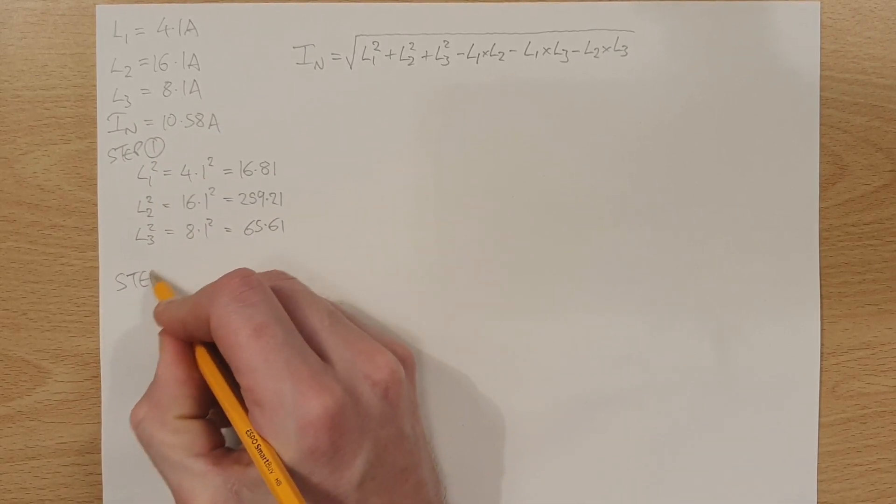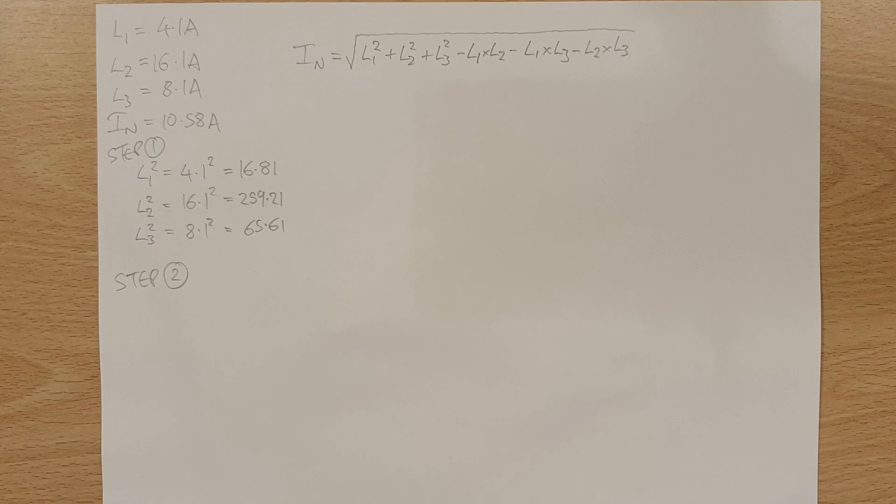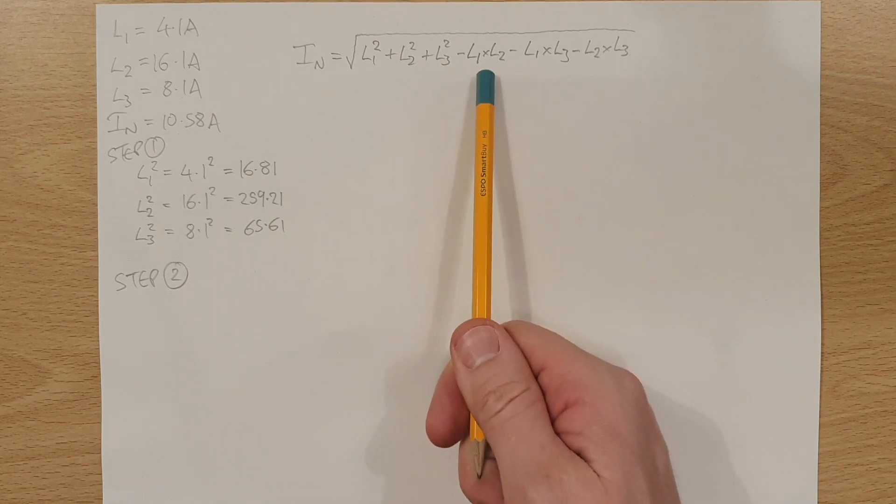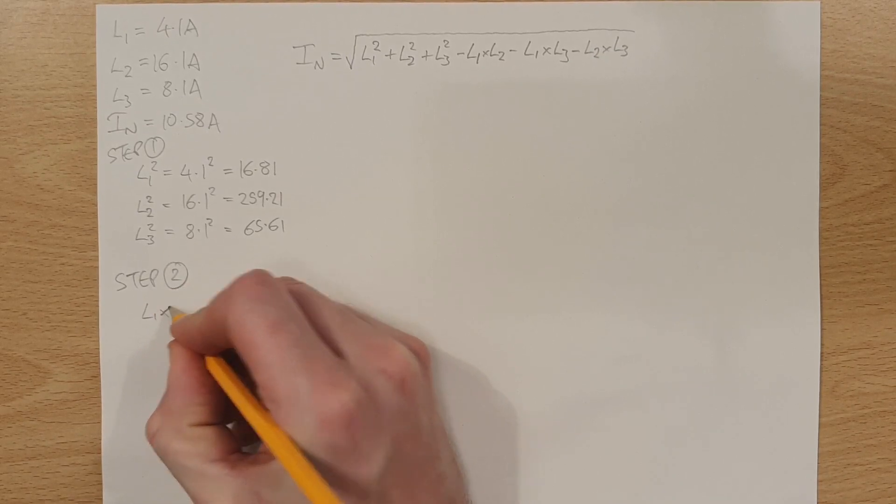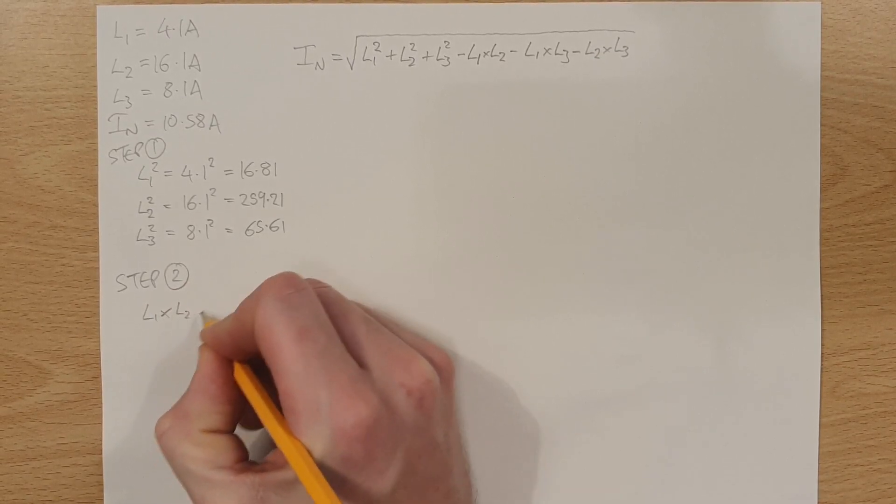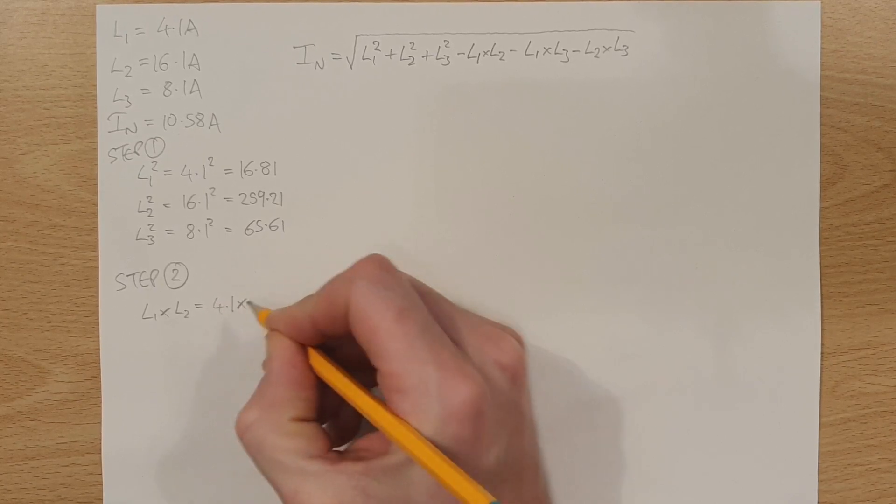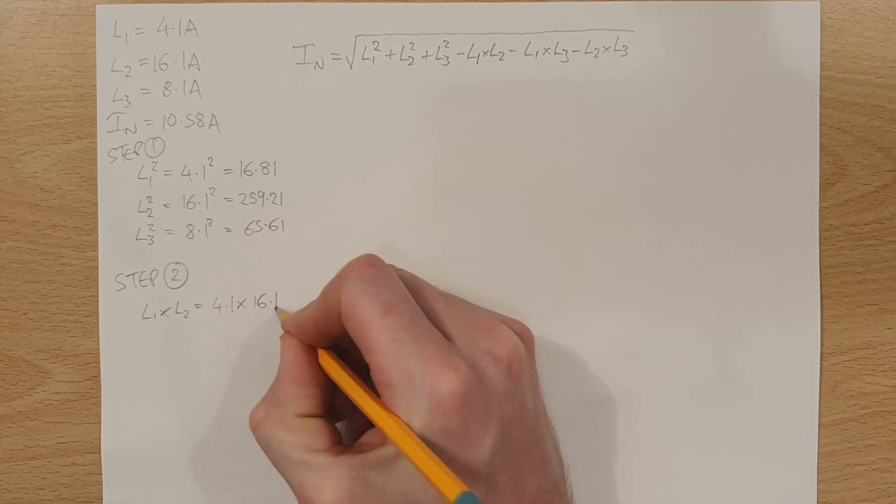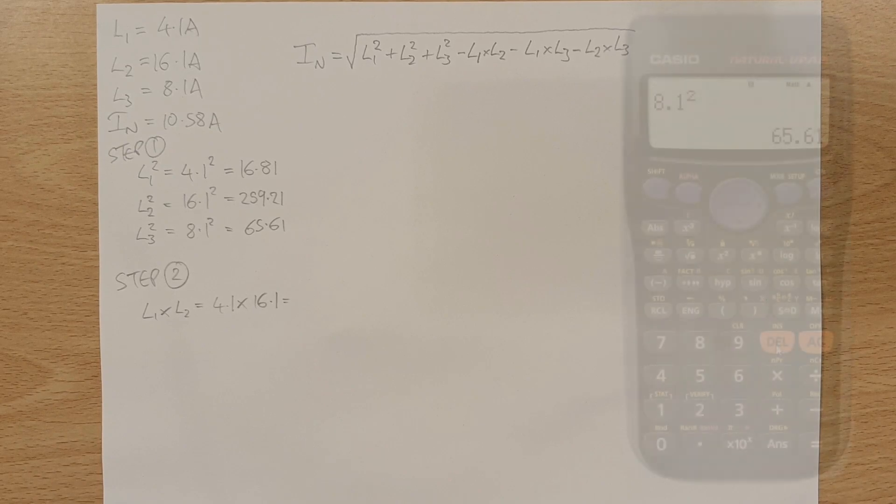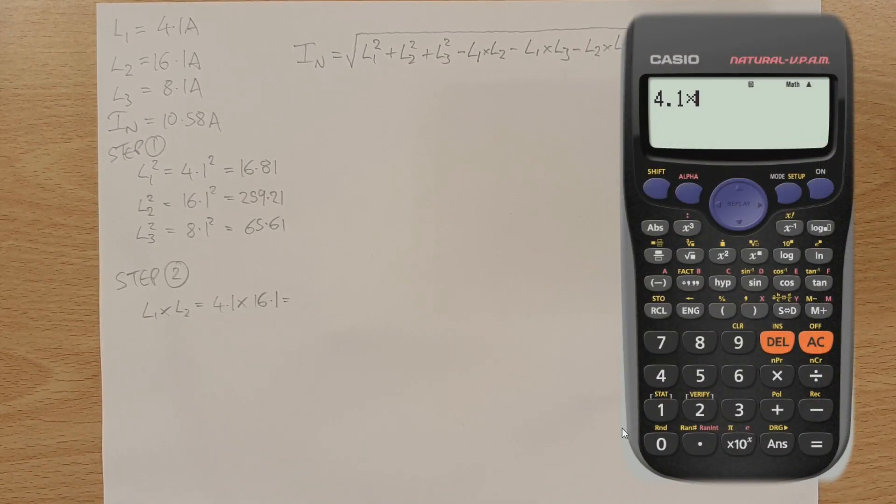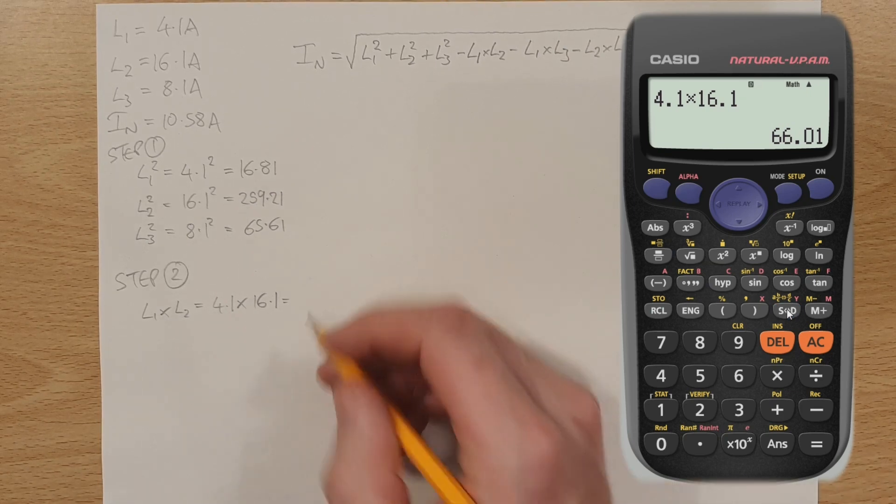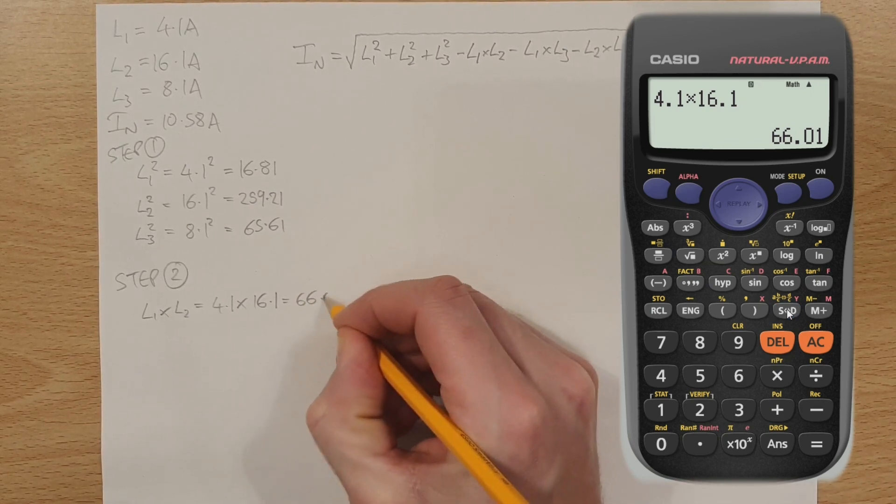So let's have a look at step number two now. Step number two is simply going to be this part where we figure out what these numbers are going to be. So L1 times by L2 will be equal to 4.1 multiplied by 16.1. So that's 4.1, 4.1 times by 16.1. And that comes out at 66.01. So we've got 66.01.